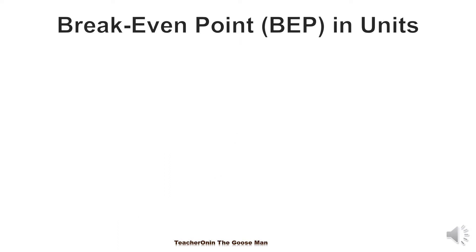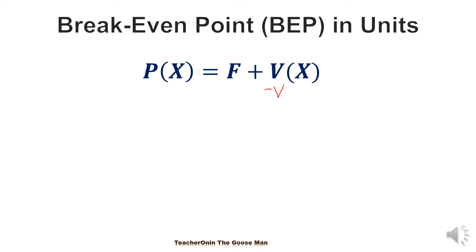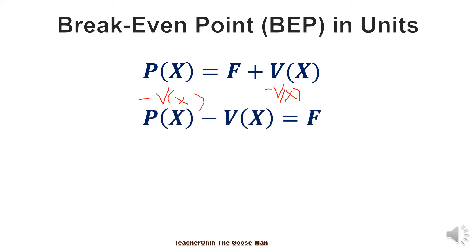If I want to get the break-even point in terms of units, I'll start with the formula P times X is equal to F plus B times X. Take note that if I subtract both sides of the equation by B times X, and subtract also B times X on this side, we'll come up with P times X minus B times X is equal to F. Since the common factor is X, I'll factor it out, so I have X times P minus B is equal to F.